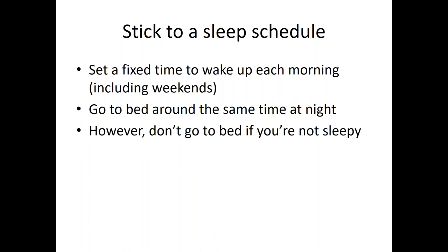Question: How much slow-wave sleep and REM sleep do you need? One thing we know about aging is that the amount of time in deep slow-wave sleep starts decreasing after about age 20 to 25 — there's a slow decline each decade. So at age 60, you might get the same total hours as at 30, but less deep slow-wave sleep. REM sleep is more consistent over the lifespan and doesn't change as much.